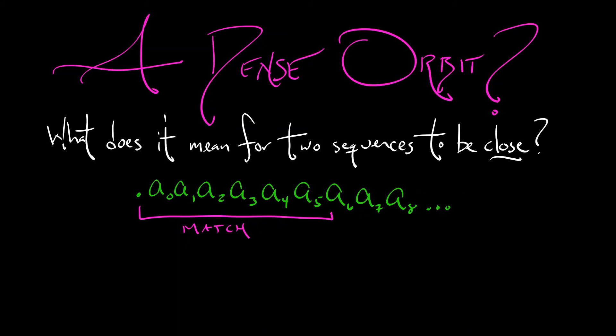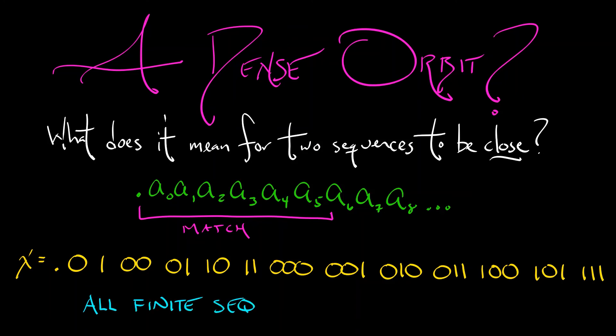Now to the question of how do we find a dense orbit, an orbit that wanders through the interval from zero to one, getting as close as you want to every single point. Well, I'm going to just tell you what the initial condition for a dense orbit is. It is the following: 0.010011000001001... but maybe you see the pattern involved here. What am I doing? I'm writing down all finite sequences in two digits, zero and one, all concatenated together.